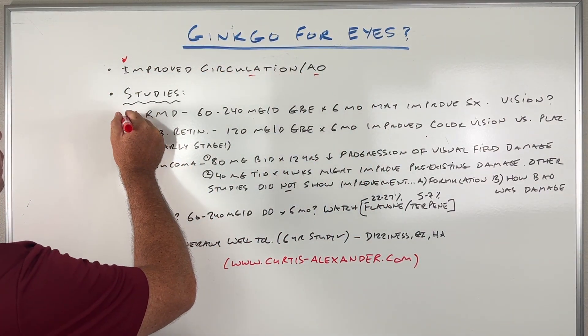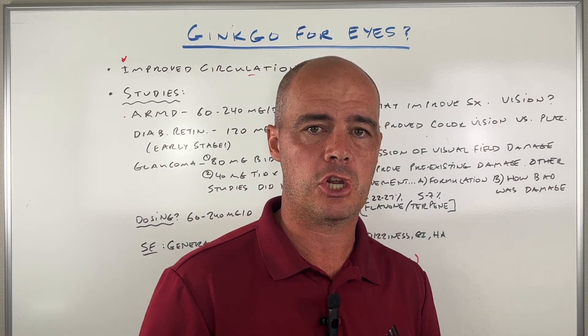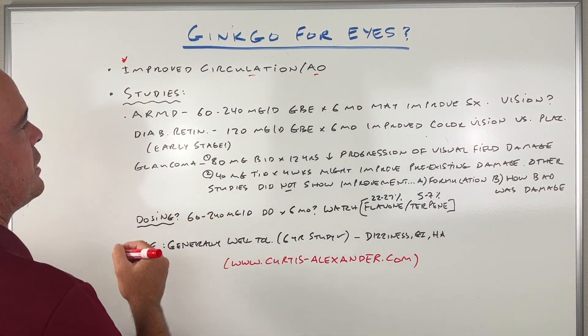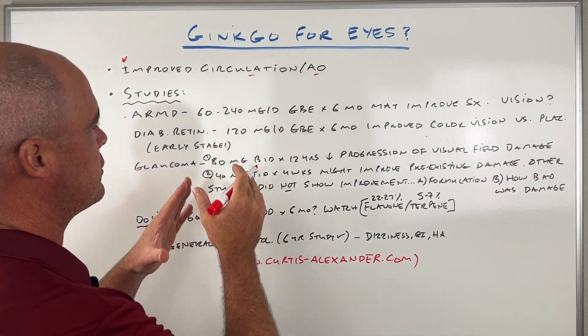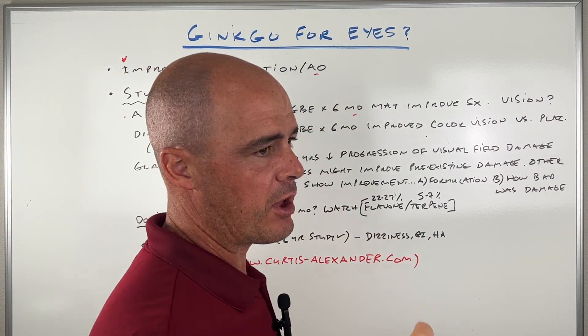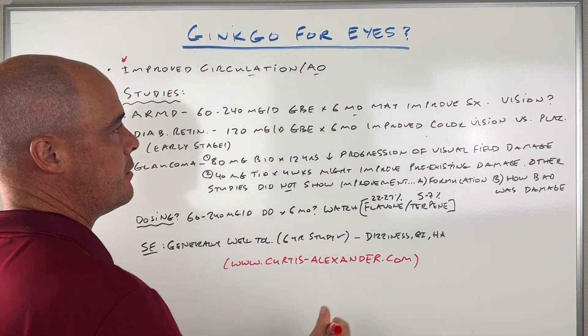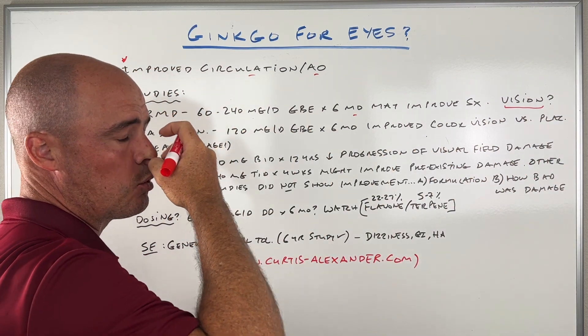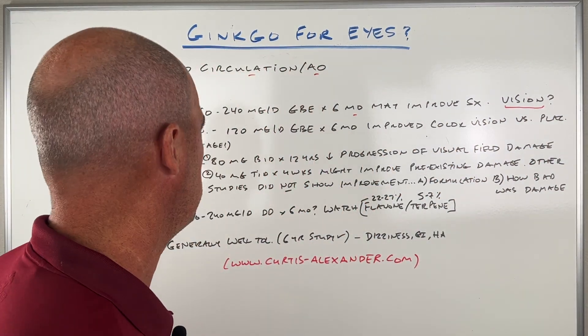So as far as studies go, we've got the first one looking at age-related macular degeneration. What they did, they gave these folks 60 to 240 milligrams a day, and what they found, they did this as a ginkgo biloba extract. They did it for six months. They did find that some of the symptoms improved. What they did not find, they're not sure if it actually helped in vision changes, but there were some of the other symptoms with the macular degeneration that did seem to improve.